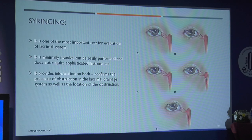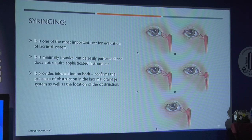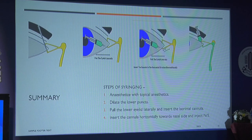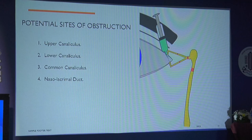Syringing is one of the most important tests for evaluation of the lacrimal system. It is minimally invasive, an OPD procedure that can be easily performed without sophisticated instruments. It provides information on both the presence of obstruction and the location of the block in the lacrimal drainage system. The technique: anesthetize, dilate the lower punctum, pull the eyelid laterally, insert the cannula, and inject normal saline.